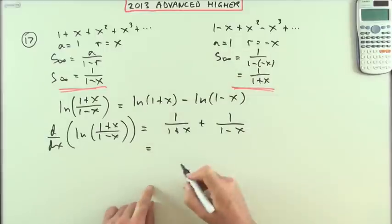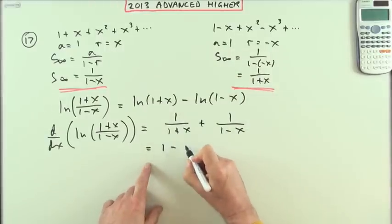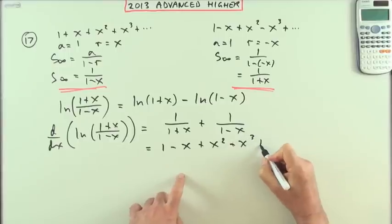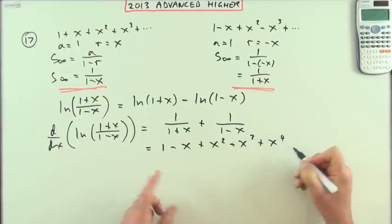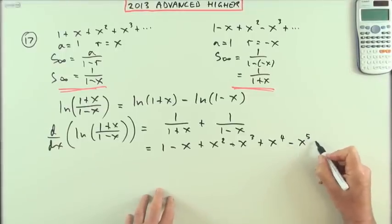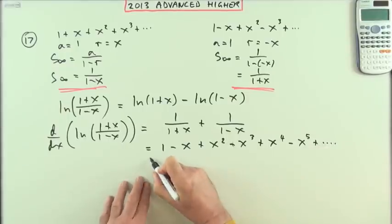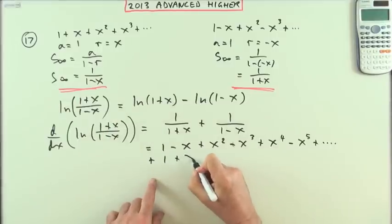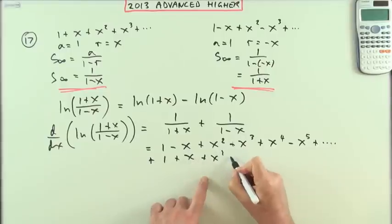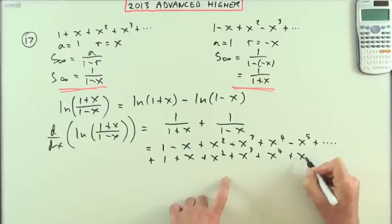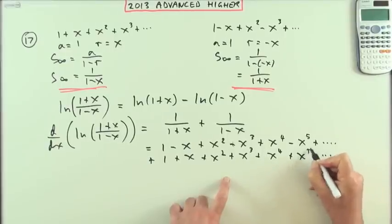I've got these two things, which means one plus one over one plus x, which is this expression. Adding that together would be 1 - x + x² - x³ + x⁴ - x⁵ plus dot dot dot, plus the other expression which is 1 + x + x² + x³ + x⁴ + x⁵ and so on.